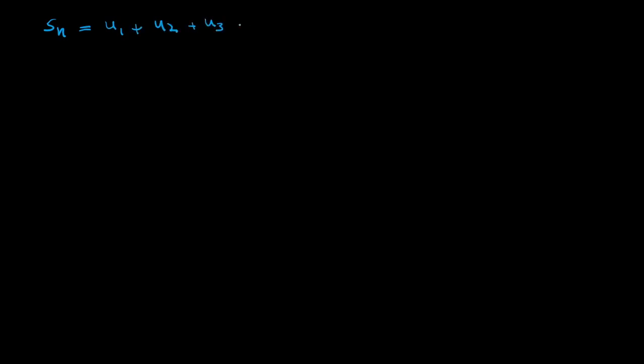Let's try to derive the formula which is in the data booklet. If you want, you can skip this part and go to the next part where we start solving questions. But if you want an intuitive feeling for how we get to the formula, you can watch from this part. So in the previous slide, I wrote that the summation — let's denote it with Sn — is the first term plus the second term plus the third term, all the way up to the nth term. Instead of writing un, I'll write it as u1 plus d into n minus 1.